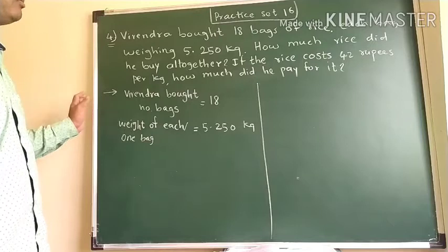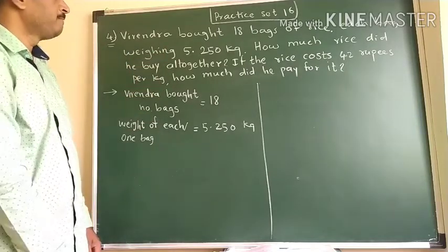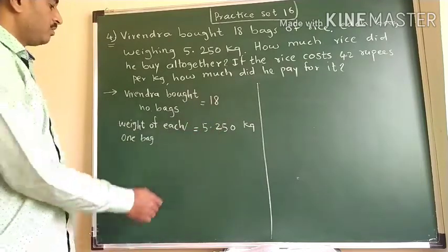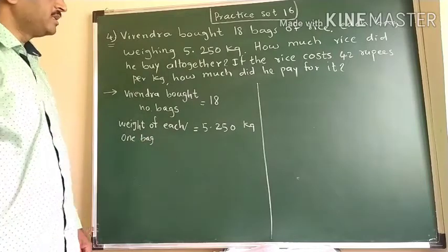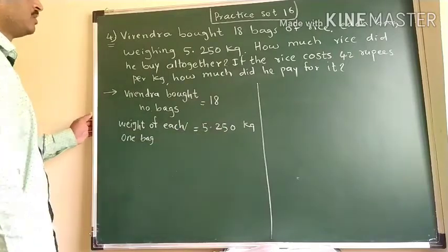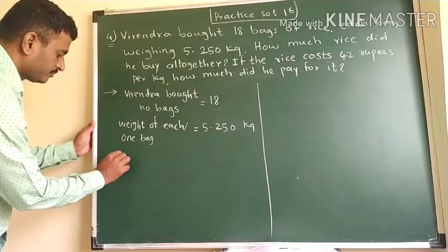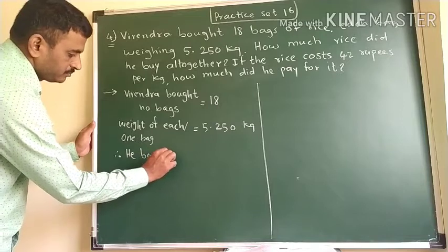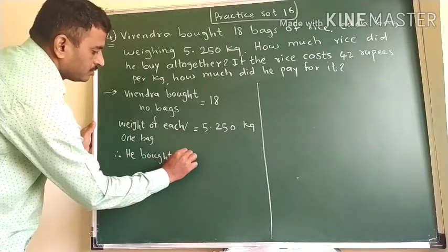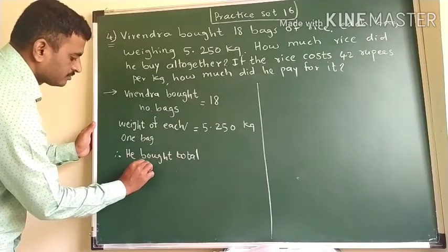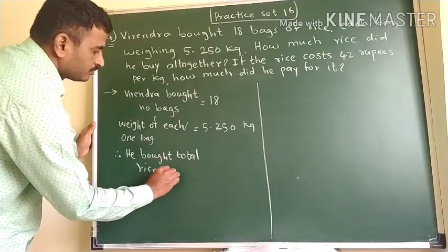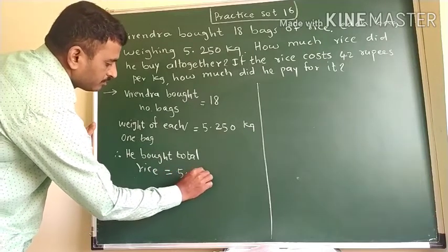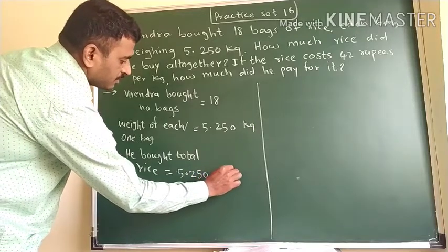Here we have to find out how much rice he bought. That is why we multiply the 18 bags by the one-bag weight of 5.250 kg. Therefore, total rice Virendra bought = 5.250 × 18.